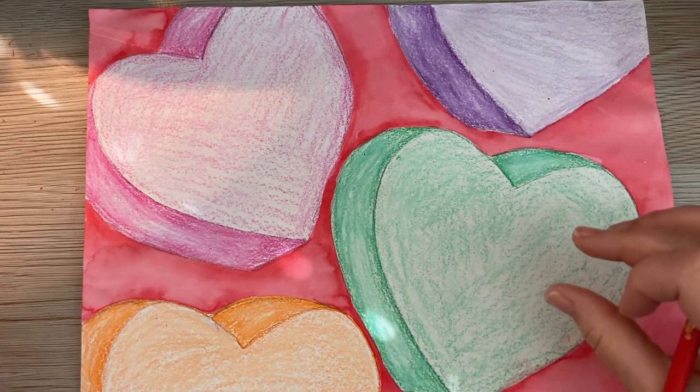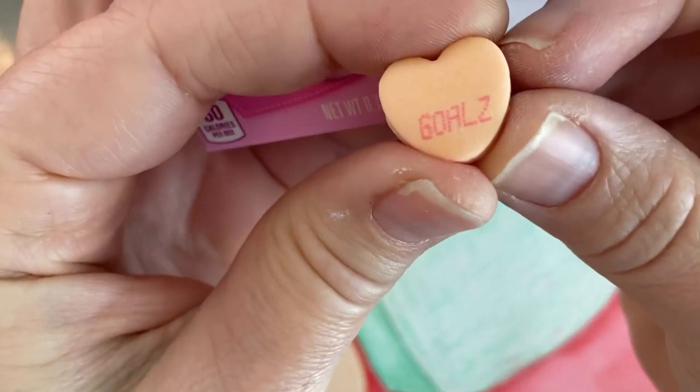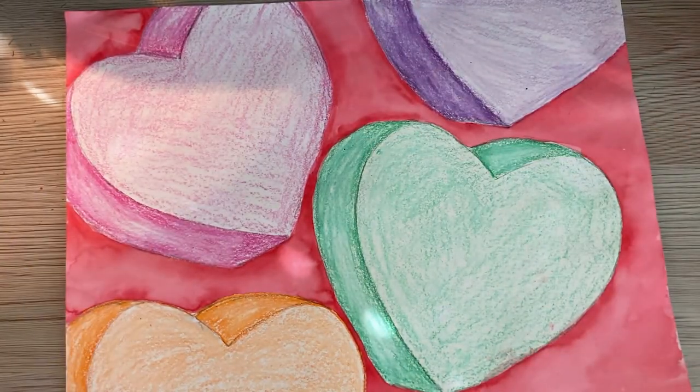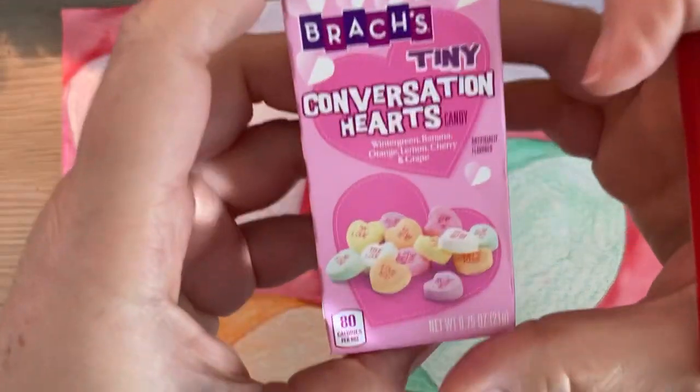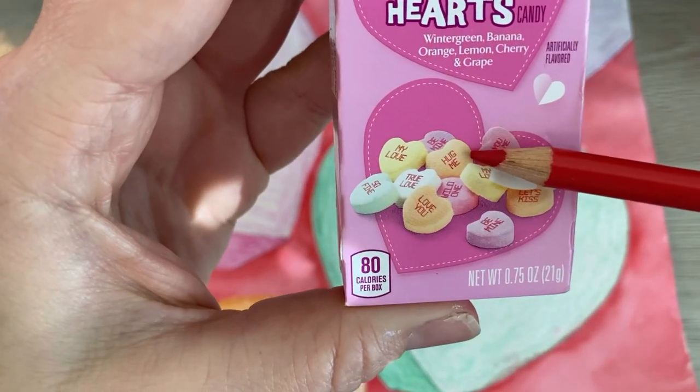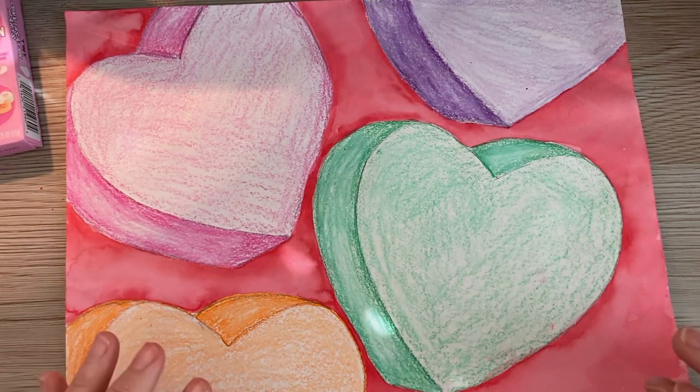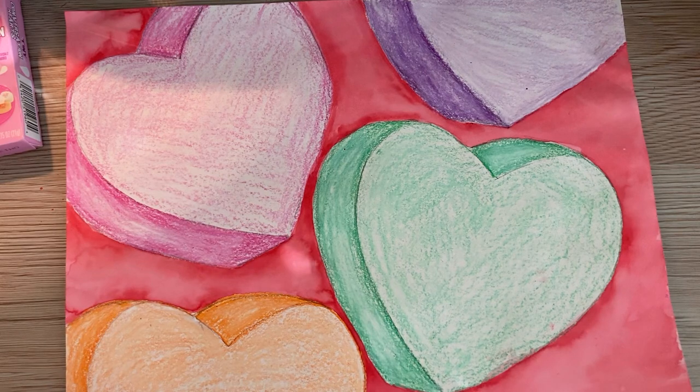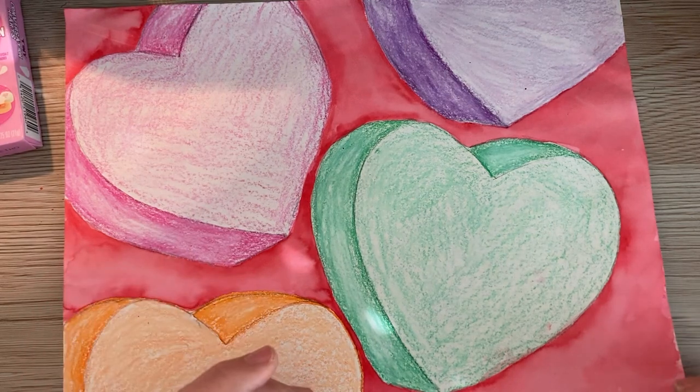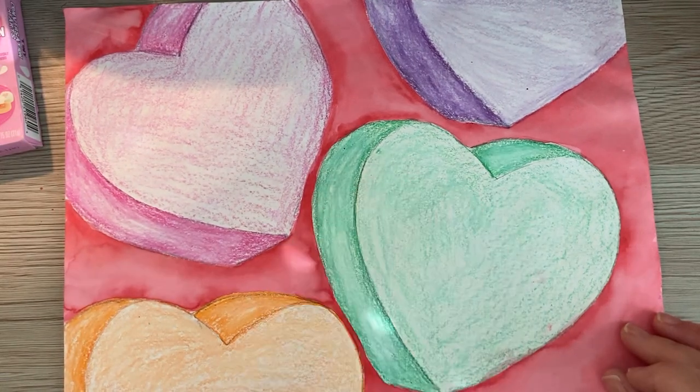Now it's time to go ahead and add the words on our candy hearts. The words are always printed in red, so you're going to need a red colored pencil or a red crayon for this if you have one. And remember, our conversations are going to be a little bit different this year. I love the hug me one, but we can't really hug each other this year. So we're going to have some fun with some COVID conversations on our hearts. So think of some fun and positive words that have come to the forefront over the past year and put those right on the center of your hearts.